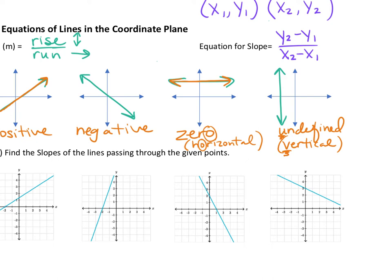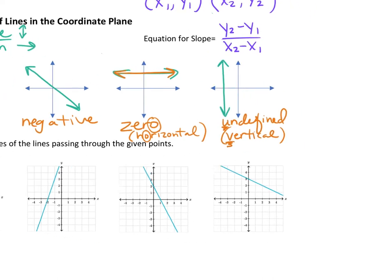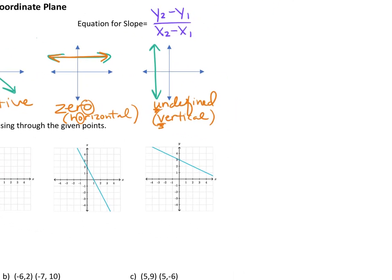The other way you can say undefined — you're allowed to say this line has no slope. So if you prefer 'no slope' to 'undefined,' that's fine. The vertical line has no slope. The horizontal line has a zero slope.